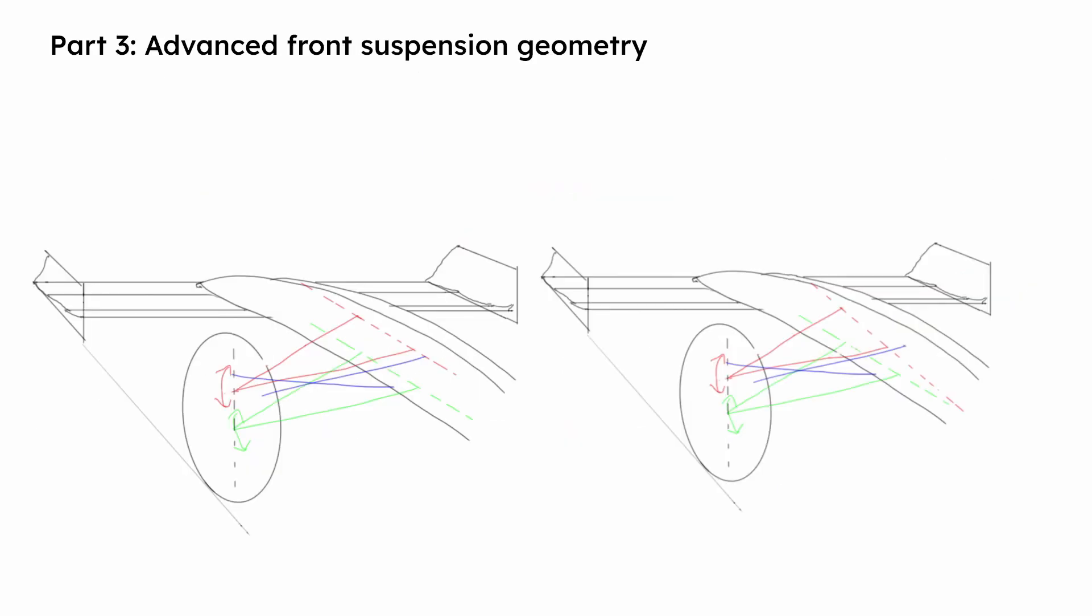The placements of the suspension components can be altered slightly. In this example on the right, the rear mount for the upper wishbone has been lowered slightly, which moves the axis of rotation. By moving the axis of rotation, this alters the direction of the force that can be transferred through the upper wishbone.